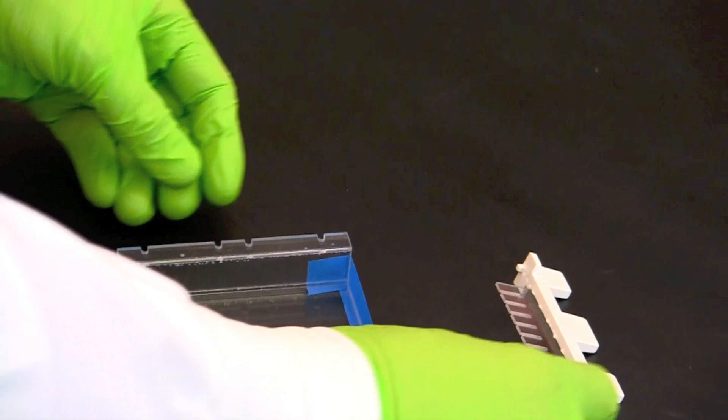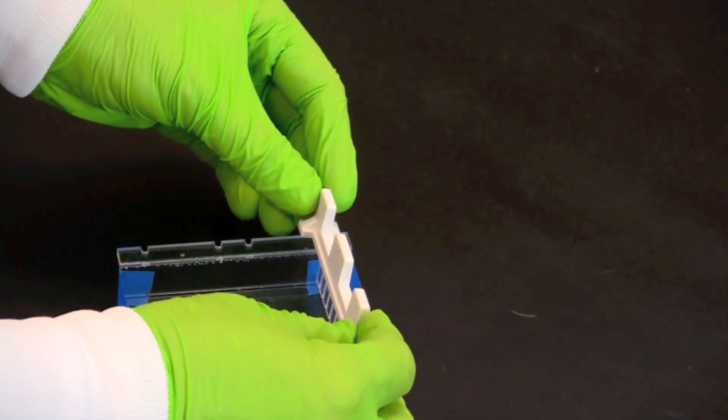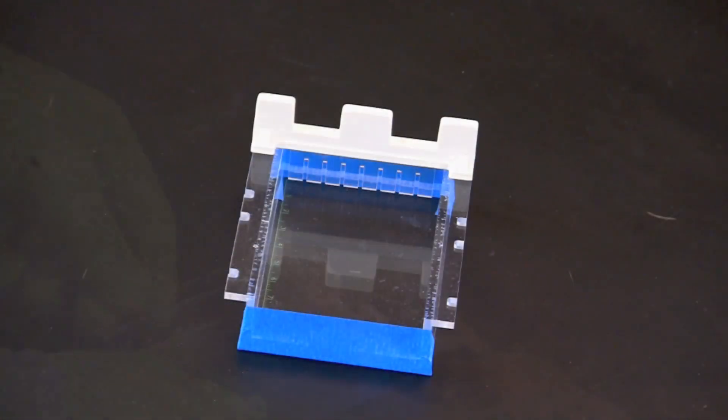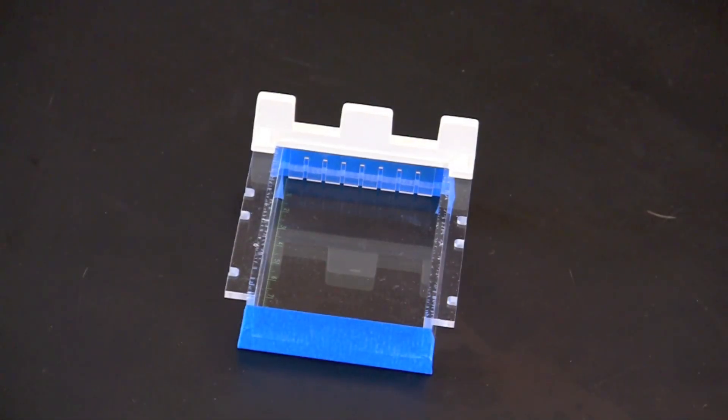Next place the comb into the comb guides on the gel tray. If you plan to run DNA samples the comb should be placed at one end of the gel tray. Place the tray with comb on a flat and level surface.